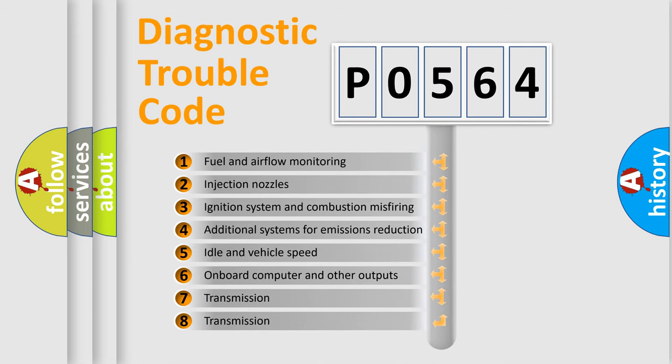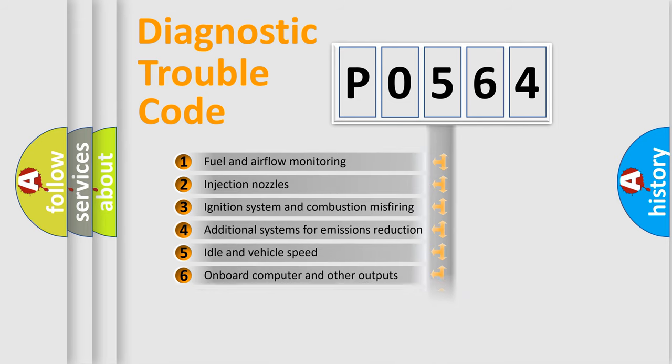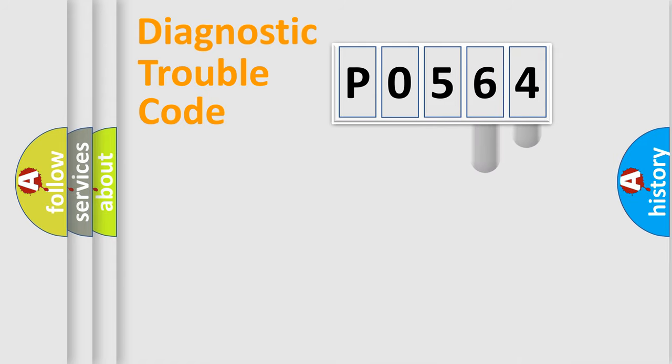The third character specifies a subset of errors. The distribution shown is valid only for the standardized DTC code. Only the last two characters define the specific fault of the group.